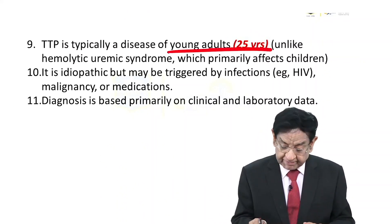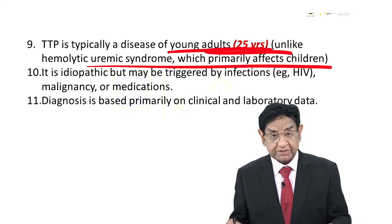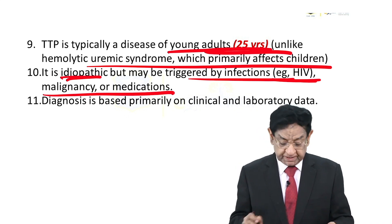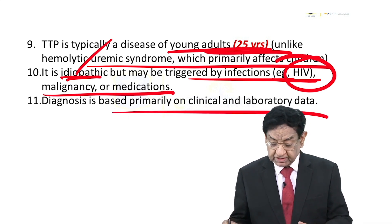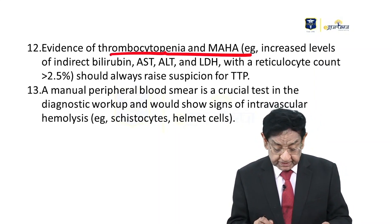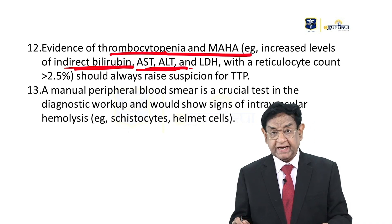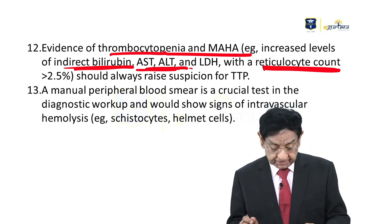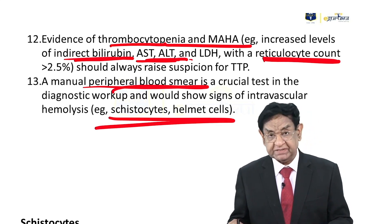TTP typically occurs in young adults — like our patient who is 25 years old. We have a similar disease called hemolytic uremic syndrome, which usually occurs in children — same clinical picture but in children. TTP is idiopathic but may be triggered by infection like HIV, malignancy, or medication. In our case, it is a well-defined case of HIV. We can make a clinical diagnosis based on clinical and lab data: we see thrombocytopenia and microangiopathic hemolytic anemia. Indirect bilirubin is increased, AST and ALT are largely normal, and retic count is increased — all raising suspicion of TTP. In such cases, the most important investigation is a peripheral smear, where we can see schistocytes and helmet cells.